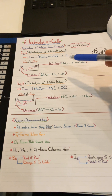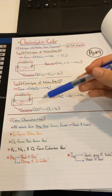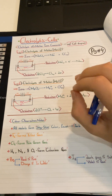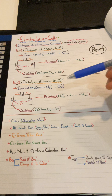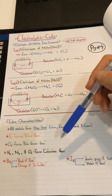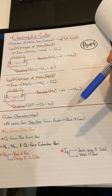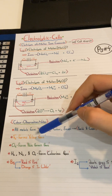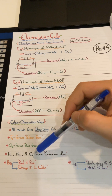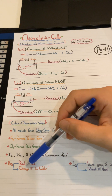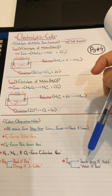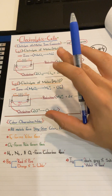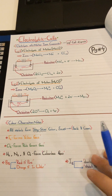Before moving on, here are color observation notes for exam questions: all metals form a shiny silver color, except gold and copper. Fluorine forms a yellow gas, chlorine forms a pale green gas, hydrogen, nitrogen, and oxygen form colorless gases. Bromine forms a red color if pure or orange if in water, and iodine forms dark gray if solid or violet if gas. Make sure to remember these rules. This topic will continue in the part two video.